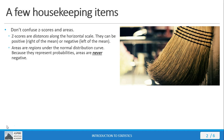Areas, on the other hand, are regions underneath the density curve for your normal distribution. They represent a probability. Because probabilities must be a value between zero and one inclusive, areas are never negative. That density curve never goes below the x-axis, so the area itself will never be negative — it's always going to be a positive value.